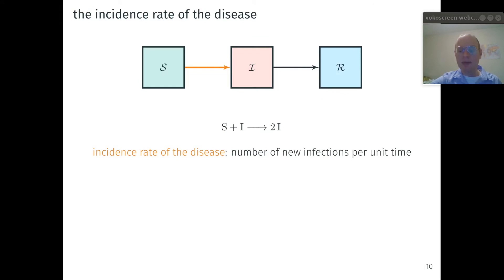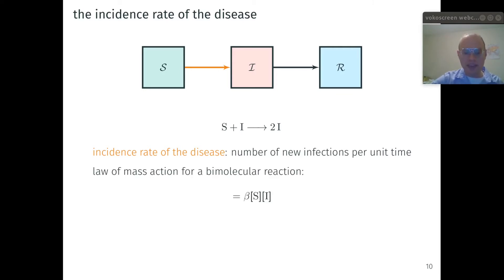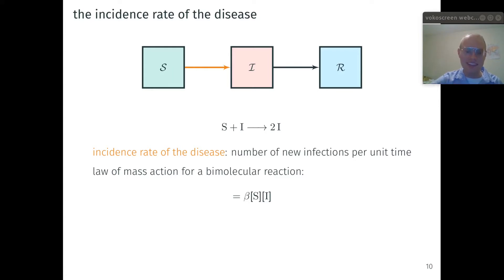Our goal is to formulate a set of differential equations governing the evolution of S, I, and R. First, let us develop a kinetic model for the autocatalytic reaction. The incidence rate of the disease is defined as the number of new infections per unit time. If we view the reaction of S and I as a bimolecular reaction — S and I individuals do have to come together and collide in the batch reactor in order to react — we can invoke the law of mass action to model the incidence rate as a transmission rate constant beta times S times I. This is a bilinear symmetric function of S and I.